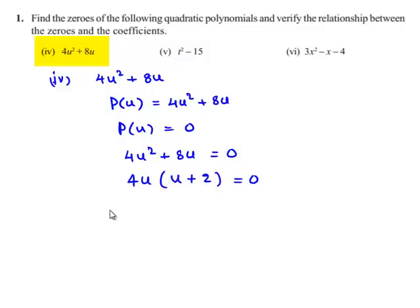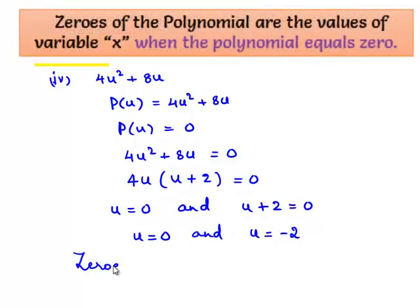From this we can say that u = 0 and u + 2 = 0. So u = 0 and u = -2. Therefore the zeros of the given polynomial are 0 and -2.